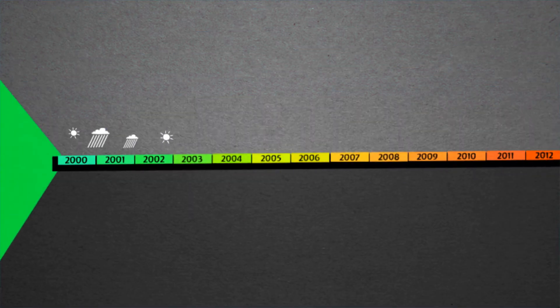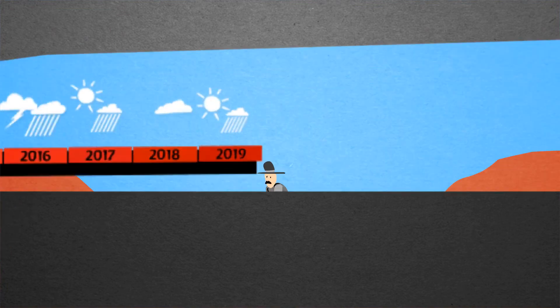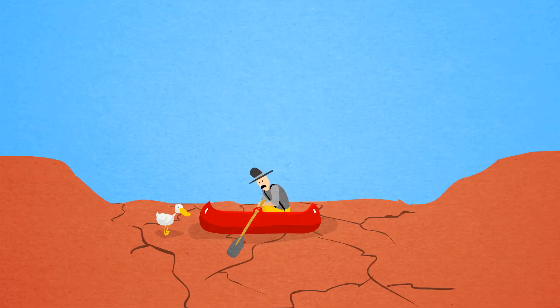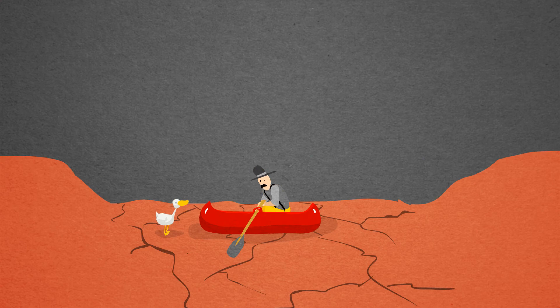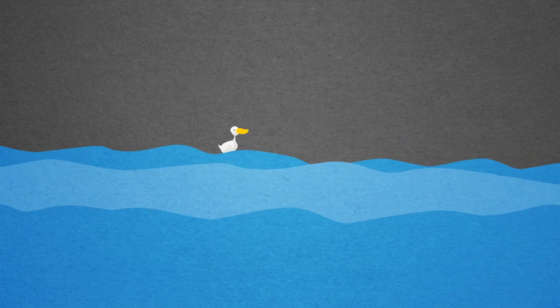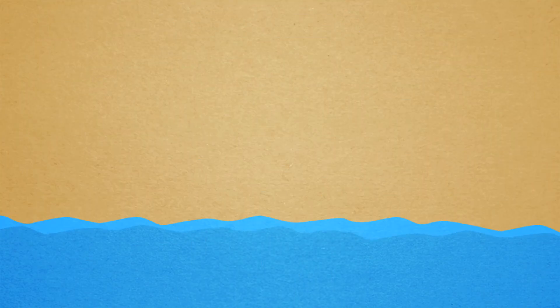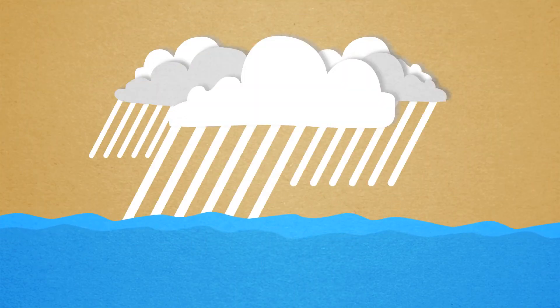A warmer world is also likely to compound Victoria's traditional rainfall variability. That means more years when there's less rain than in the past, punctuated by periods when there's too much. When it does rain, it's also likely to come in shorter, bigger bursts, because a warmer atmosphere can hold more moisture.